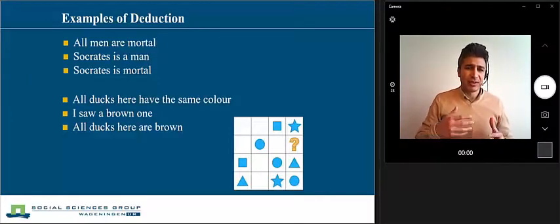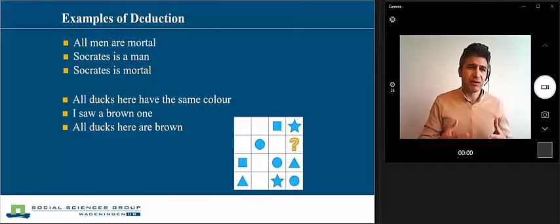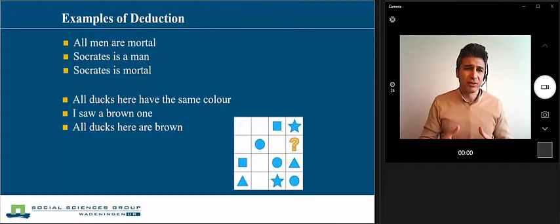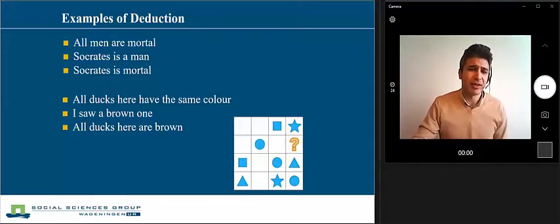In deduction it's the other way around. Look at this picture. You need to make some sort of story based on the deductive approach. For example, all men are mortal. Socrates is a man, so Socrates is mortal. It's a kind of deductive approach in our argumentation and scientific activities.